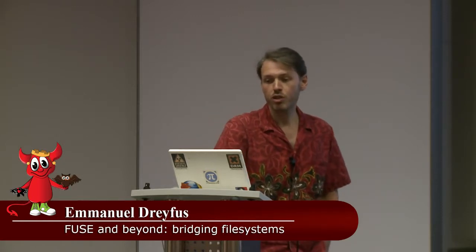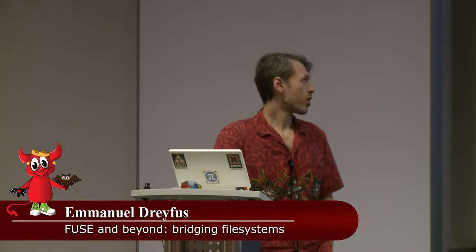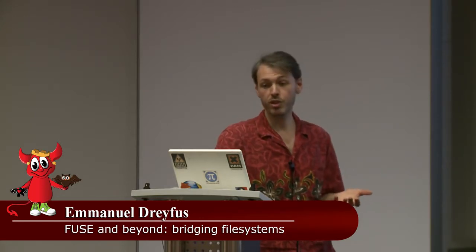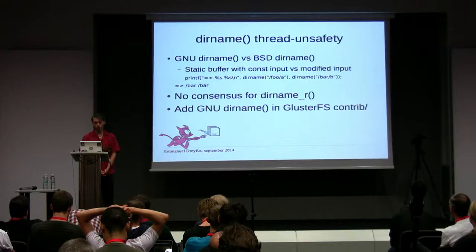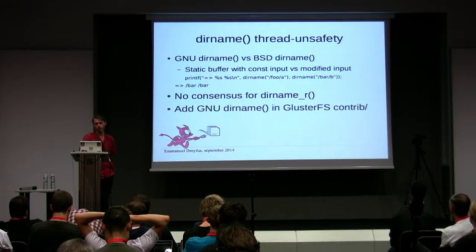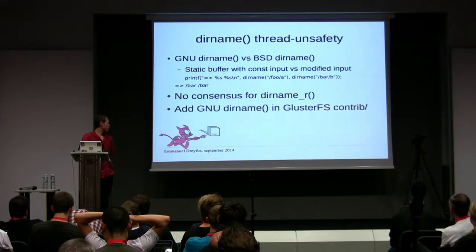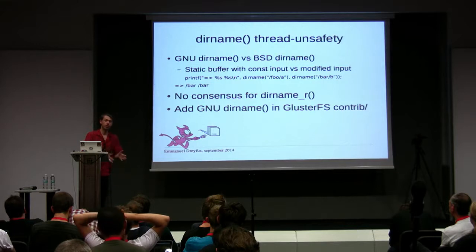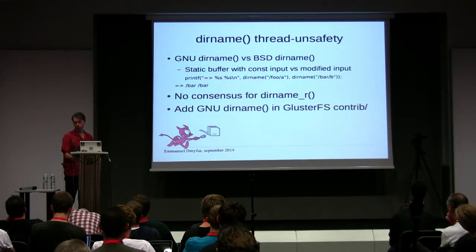Another well-known problem is DNS thread unsafety. The standard doesn't tell us whether getaddrinfo should alter the buffer it is given or return static memory — both behaviors are standard compliant. GlusterFS assumes Linux behavior, which is to modify the buffer, while NetBSD uses a static buffer. There is no consensus on thread-safe getaddrinfo_r either. The solution was to add the GNU DNS code inside the compat directory of GlusterFS — if they want the Linux version, just give them the Linux version.